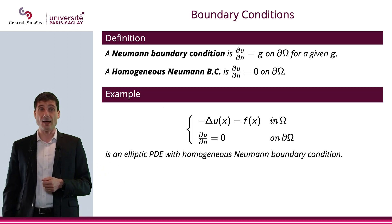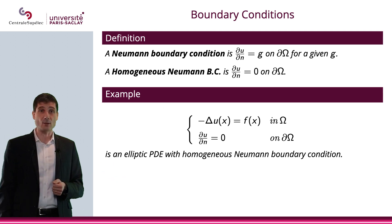And homogeneous Neumann boundary condition means that G is equal to 0. Here is an example, minus Laplace U equals F, and dU over dN equals 0.